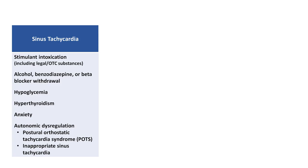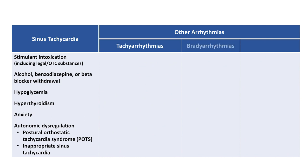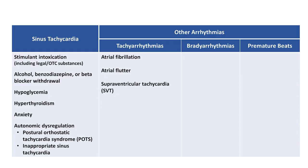The next category in our framework is probably best just labeled other arrhythmias, and includes the subcategories of tachyarrhythmias, bradyarrhythmias, and premature beats. Under tachyarrhythmias, the most common rhythms here are atrial fibrillation and atrial flutter. There is also a term supraventricular tachycardia, or SVT. Although usage of that term varies across specialties, I think it is the most helpful when applied as cardiologists do, as an umbrella term that includes AV nodal reentrant tachycardia, better known as AVNRT, the similarly named AV reentrant tachycardia, or AVRT, which is the primary arrhythmia seen in Wolff-Parkinson-White syndrome, and atrial tachycardia.